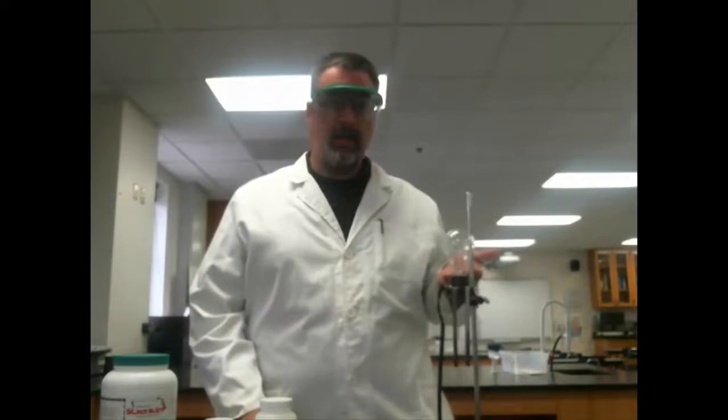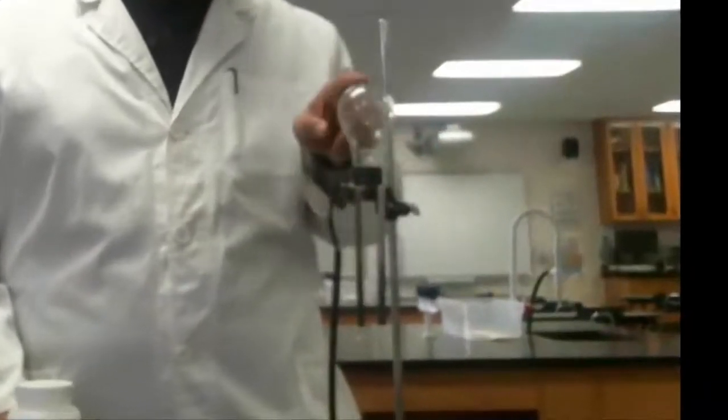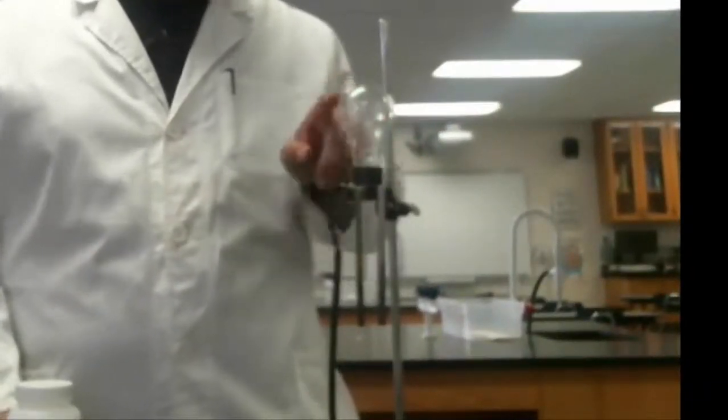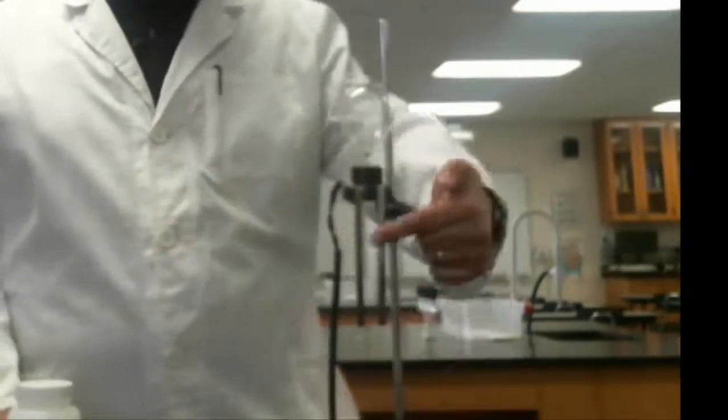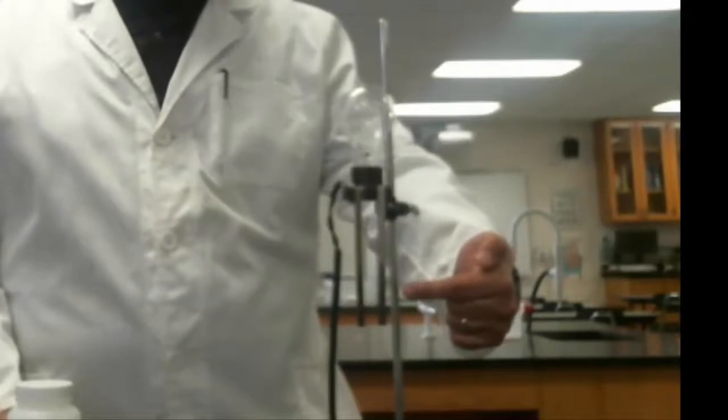One of the ways that we can test the conductivity of a solution is by running an electric current through it. We need something to register that the current is actually flowing. So in my great conductivity tester of science here, I simply have a light bulb which is attached to this little rig here, plugged into the mains, and I have two electrodes sticking down.